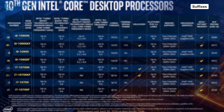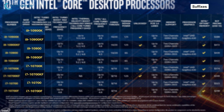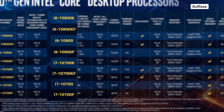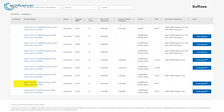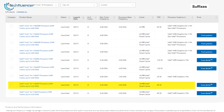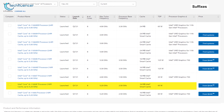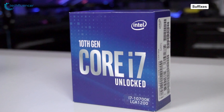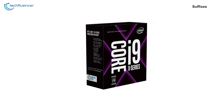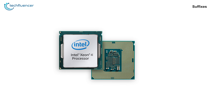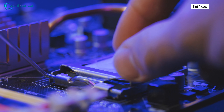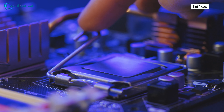You will often see an Intel processor with the letters K, F, and E at the end, which act as suffixes with a lot more to tell. For instance, a processor with the letter F at the end means it doesn't come with integrated graphics. The letter K represents unlocked processors that can be overclocked, X represents performance, and E represents mainstream ones. Keep these letters in mind while considering buying an Intel processor to get the correct one.